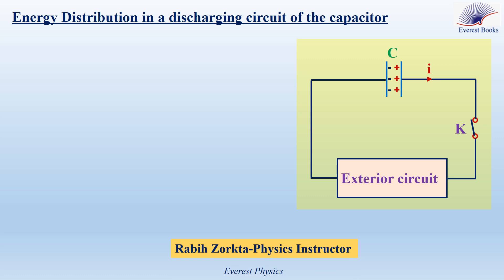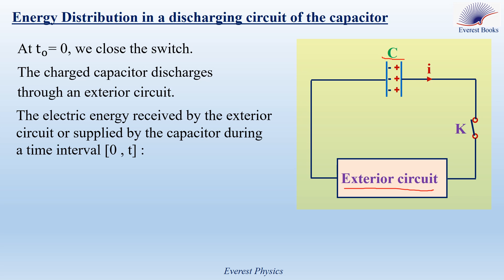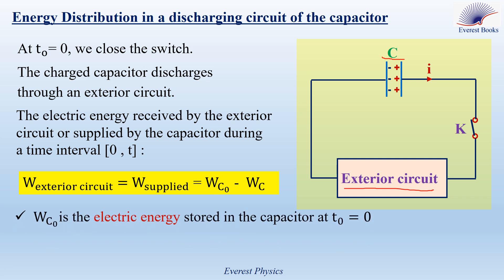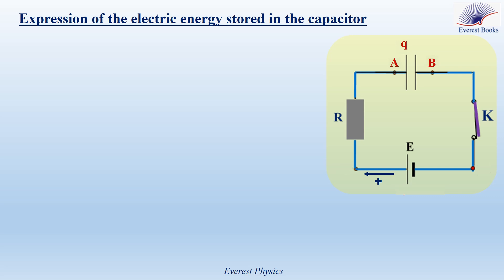Now let's explain the energy distribution in a discharging circuit of the capacitor. In this circuit we have a charged capacitor that discharges through an exterior circuit — such as a lamp or a resistor. At time zero, we close the switch, so the charged capacitor discharges through the exterior circuit. The electric energy received by the exterior circuit — or the energy supplied by the capacitor — during a time interval zero to T is given by Wc0 minus Wc, where Wc0 is the electric energy stored in the capacitor at time zero and Wc is the electric energy stored in the capacitor at an instant T.